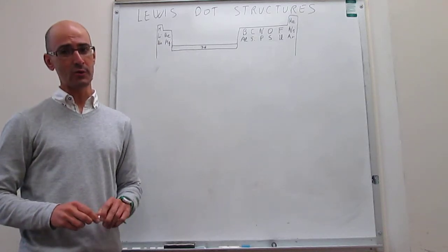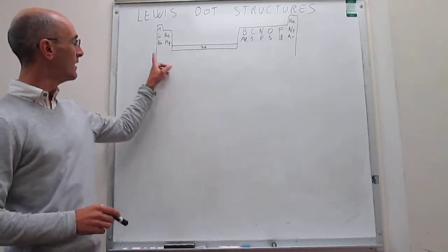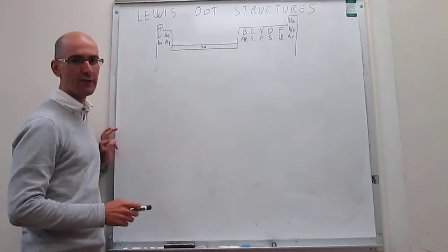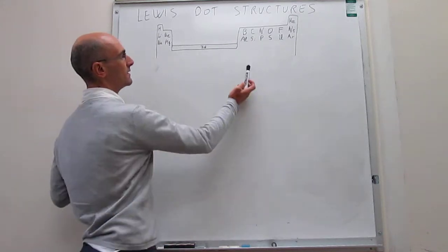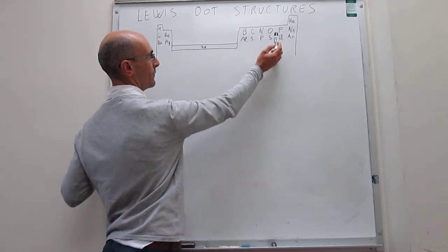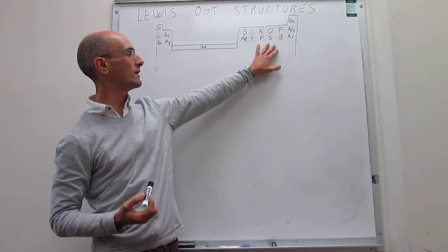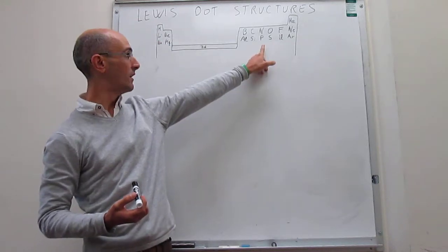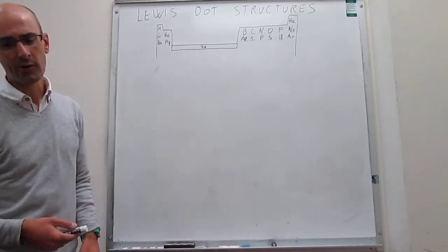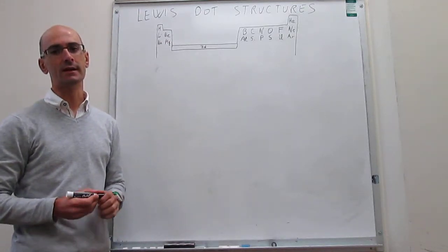Something common about structures with expanded octets is that the atoms belong to the third row or lower. We will never find expanded octets in molecules with atoms in the second row, so boron to fluorine. However, when we start to look at molecules that appear in nature with atoms on the third row and lower, we see that occasionally there are structures with more than 8 electrons around them.